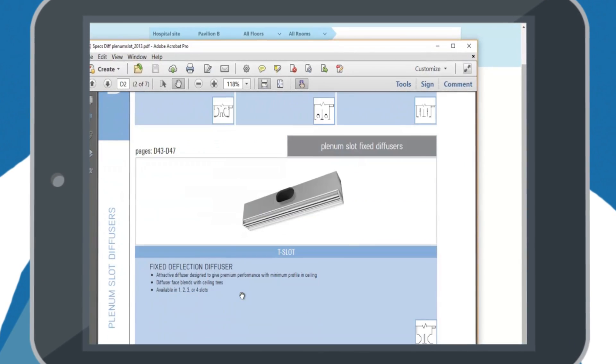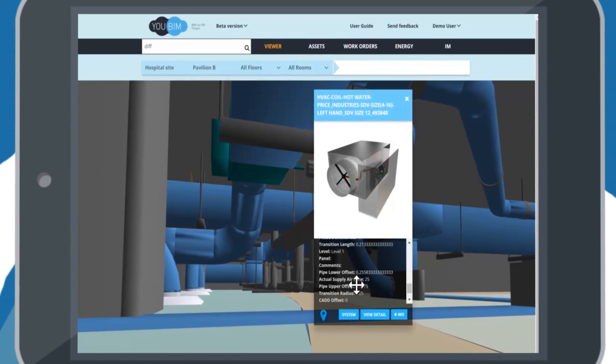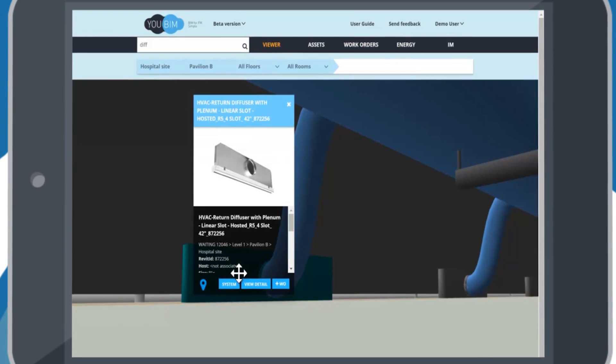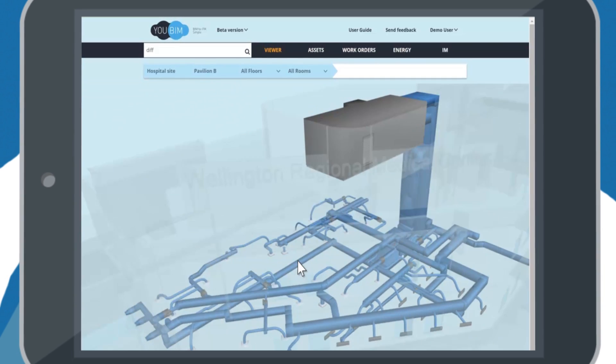You can quickly find an asset within your building in 2D and in 3D. Get its full information, including attributes, documents, live BAS readings. Understand the environment around an asset you are about to maintain, understanding its system.